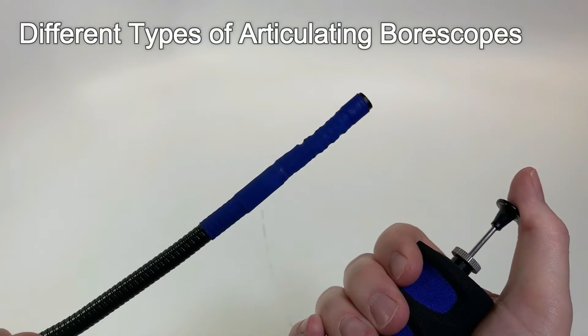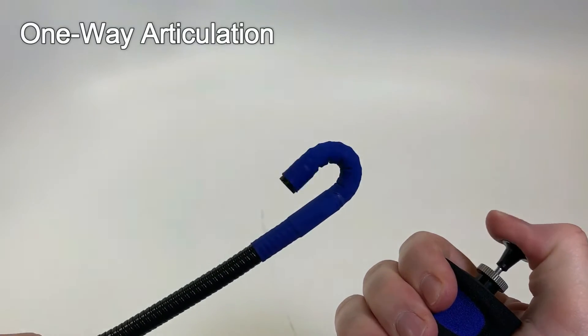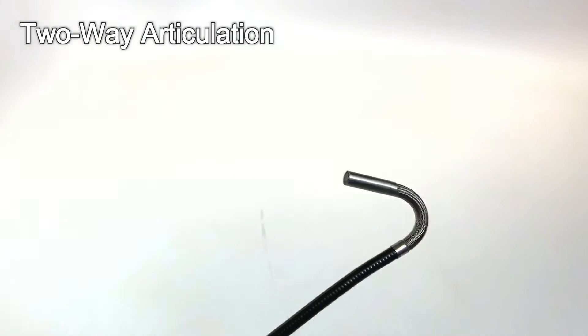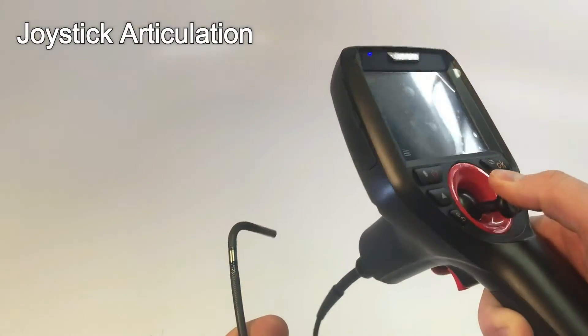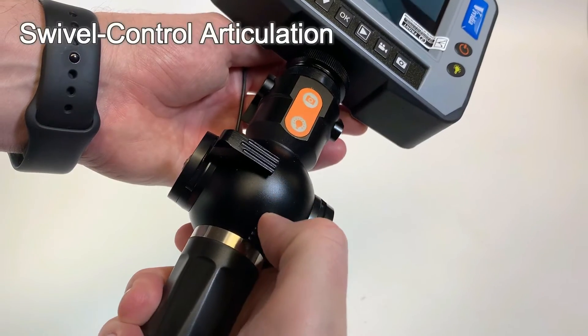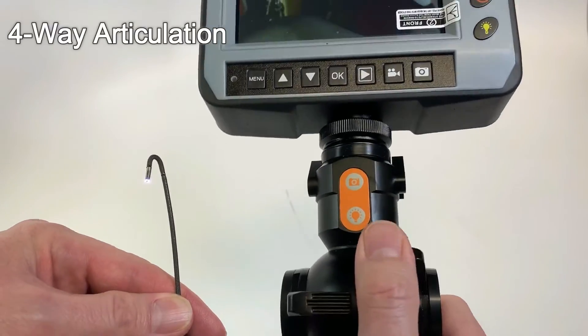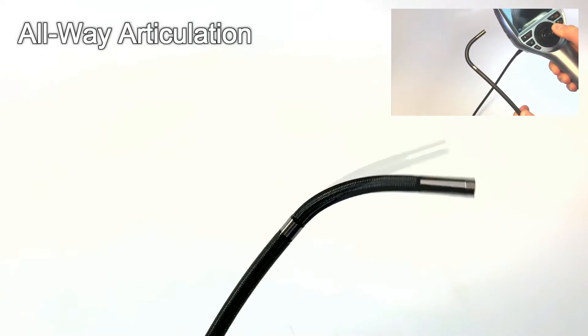Here are some examples of different types of articulating boroscopes: one-way articulation, two-way articulation, joystick controlled, swivel controlled, four-way articulation, and all-way articulation.